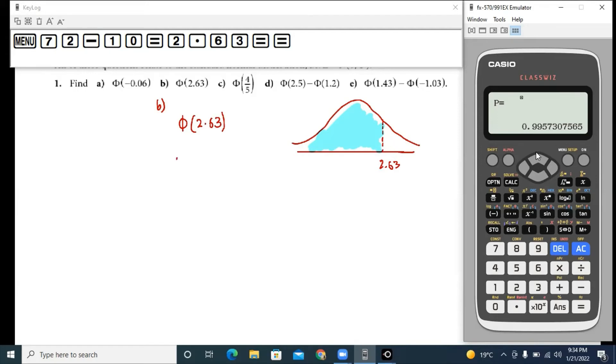And if you look at your normal distribution table you will find that the probability reads out as 0.997.